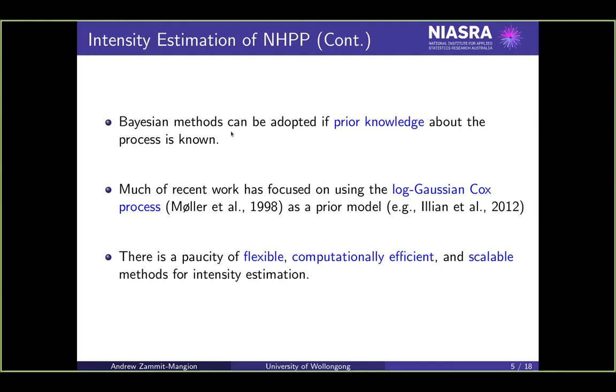Another popular approach is using a log-Gaussian Cox process, where essentially you model the log of the intensity function, because the intensity function is non-negative. So you model the log of that as a Gaussian process. If we're talking about spatiotemporal models, you can have some spatiotemporal covariance function there. Then the intensity function will be the exponential of that.